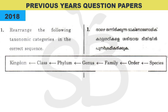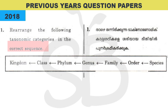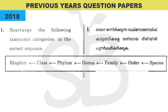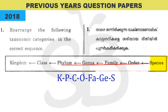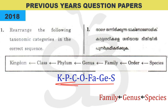Next question from 2018: 'Rearrange the following taxonomic categories in the correct sequence.' For taxonomical categories, we use a small mnemonic trick discussed in the Living World chapter — KPCOFGS. In descending order, the taxonomical categories are: Kingdom, Phylum, Class, Order, Family, Genus, and Species. To rearrange them, the first level is Species, then Genus, Family, Order, Class, Phylum, and Kingdom.